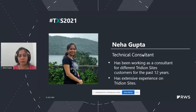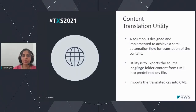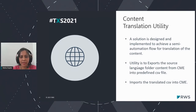Now let's talk about the utility. We have implemented a semi-automation flow for translating content. This utility is to export the source language folder content from the CME into a predefined CSV file. This CSV file can be used by any translation team to add their respective translated content, and then we use the same CSV file to import the translated data into the CMS. This is the high level of what this utility is all about.